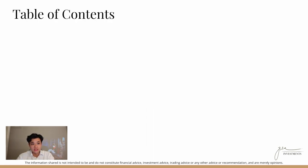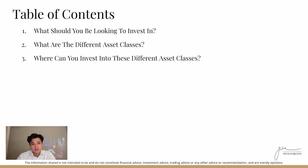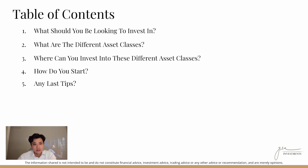So the table of contents is as follows. First of all, we'll talk about what you should be looking to invest in. Next, what are the different asset classes and what do asset classes mean in the first place? Then we'll talk about where you can invest into these different asset classes, how you can start investing, and we'll end it off with any last tips.